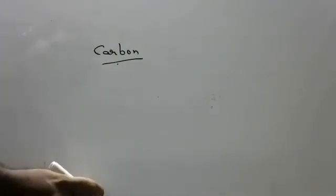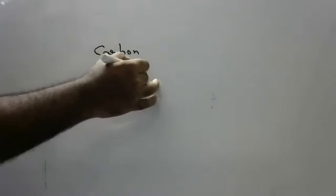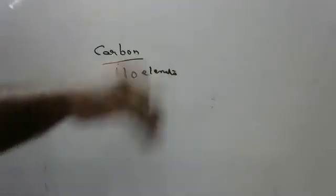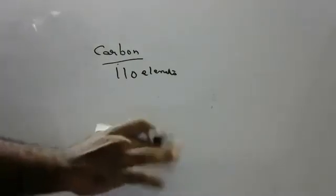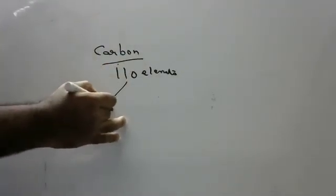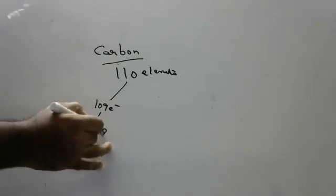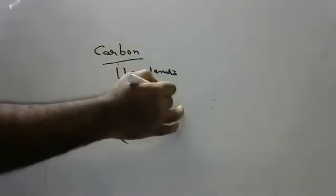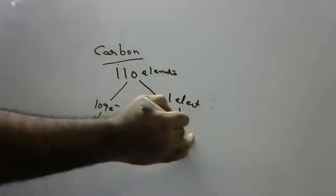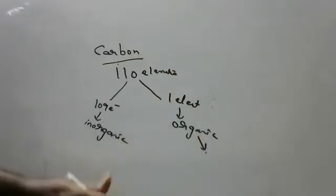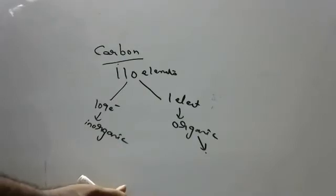Today we will discuss carbon compounds. There are approximately 110 million different known compounds. There are about 110 elements, but only up to 94 are real natural elements — after that, all are artificially prepared. Of these 110 elements, 109 are studied under inorganic chemistry, and only one element is studied under organic chemistry: carbon.